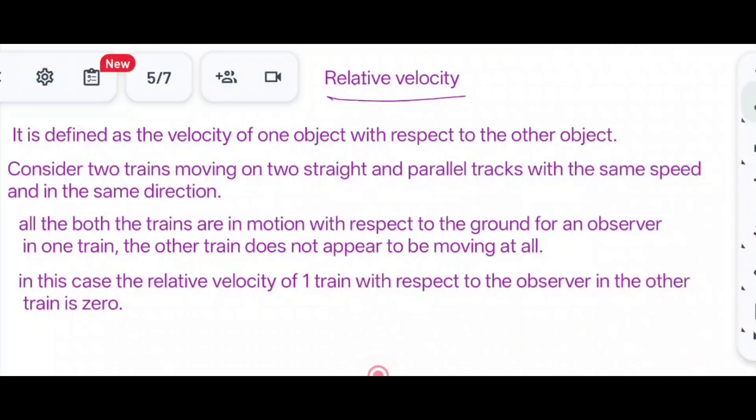Relative velocity: what is relative velocity? It is defined as the velocity of one object with respect to the other object. That is, it is a difference between velocity of two objects: Vr equals Va minus Vb.